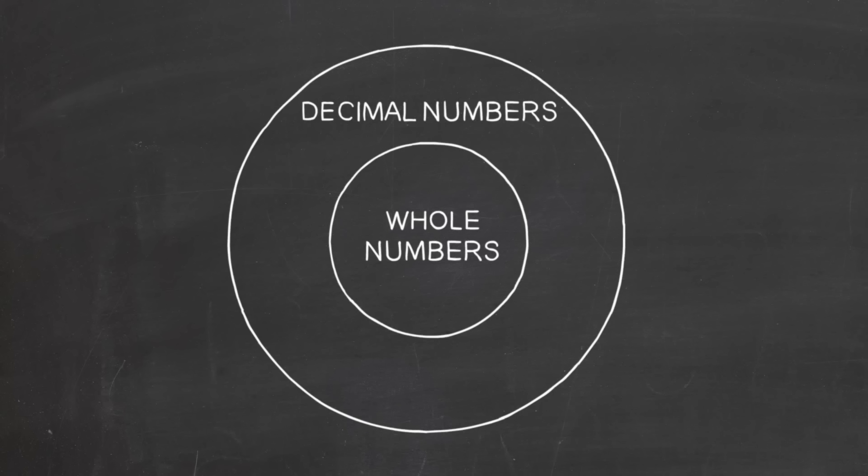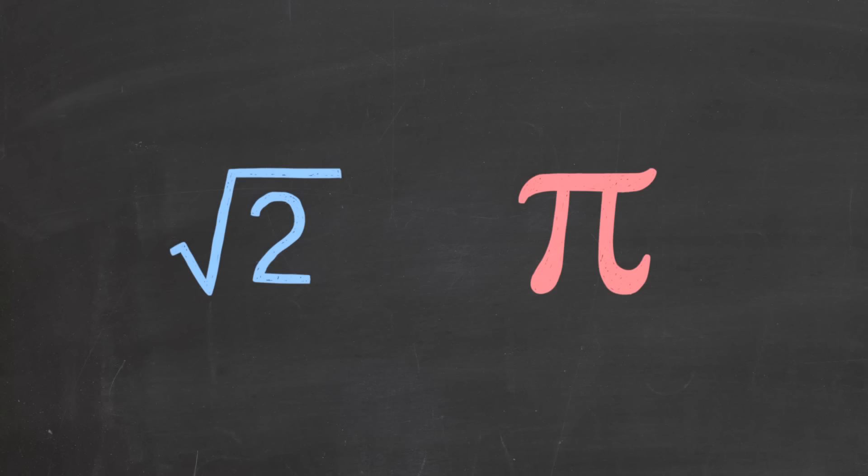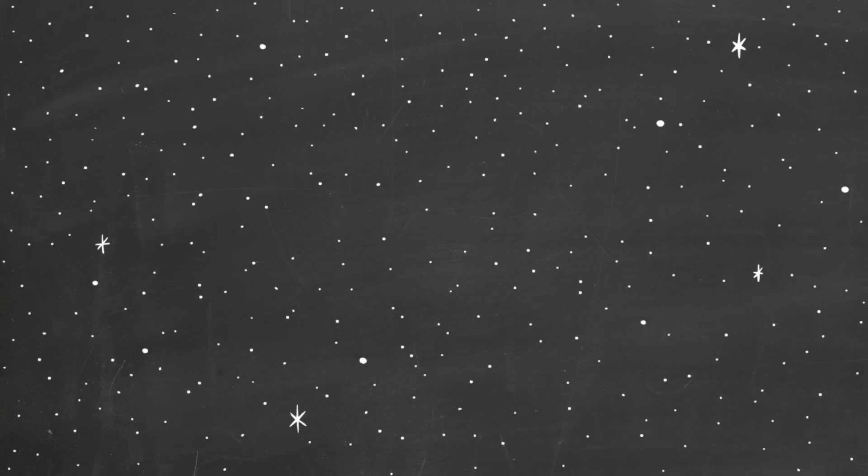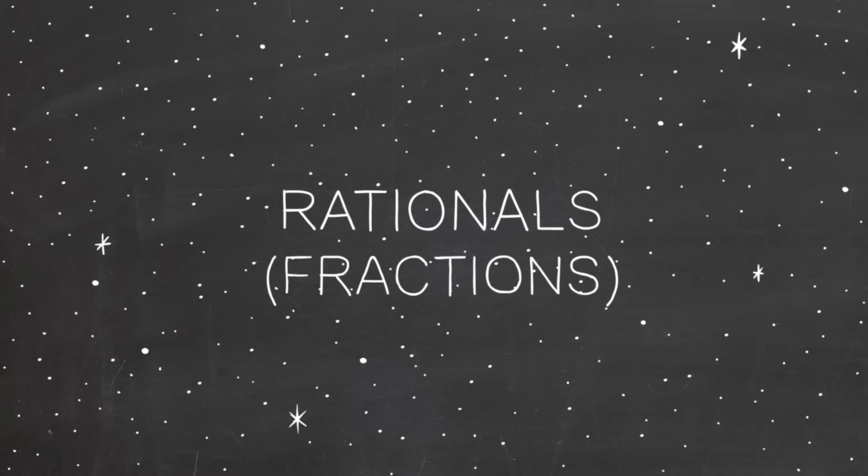So we're faced with this astounding conclusion. The decimal numbers cannot be put on a list. They represent a bigger infinity than the infinity of whole numbers. So even though we're familiar with only a few irrationals, like square root of 2 and pi, the infinity of irrationals is actually greater than the infinity of fractions.